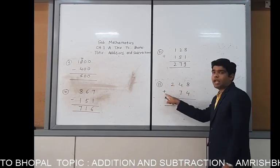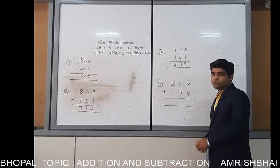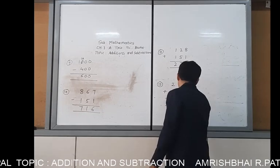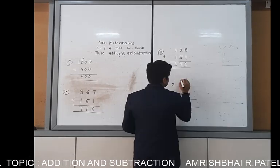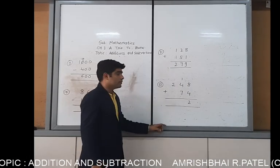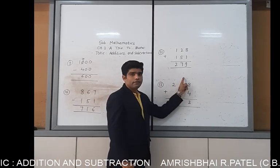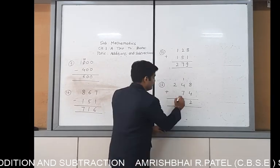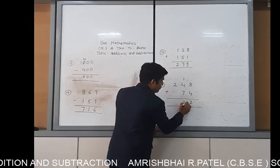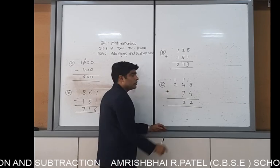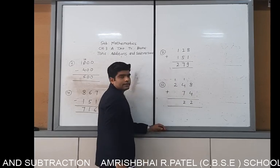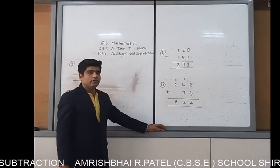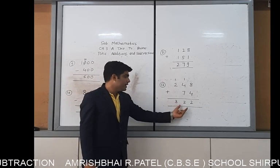Next example: 248 add with 74. 8 plus 4 is 12 — this gives 2, and 1 is carry. 4 plus 1 is 5, 5 plus 7 is 12 — this is 2, and 1 is carry. 2 plus 1 is 3. Your answer is 322.